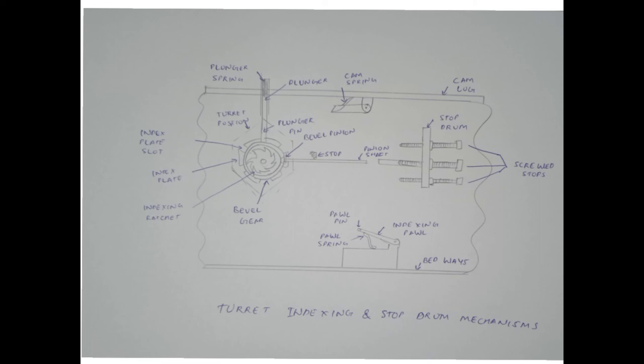Simultaneously, the pole pin engages a tooth of the ratchet which rotates due to the backward movement of the turret. Since the ratchet and turret are both mounted on the same spindle, the turret also rotates with the ratchet.